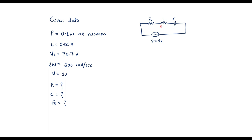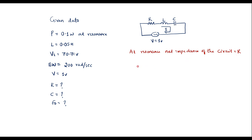Let I be the current flowing into the circuit. We know that at resonance, net impedance of the circuit is equal to R, because voltage across capacitor and inductor will be the same and cancel each other. We know that P is equal to V squared by R, so R is equal to V squared by P, that is 1 squared divided by 0.1, which is 10. Therefore, R value is equal to 10 ohms.